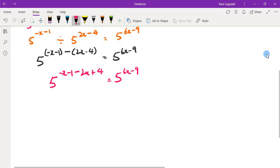Then here I can simplify it a bit. I can say 5, so minus x and minus 2x is minus 3x, 4 minus 1 is plus 3, equals to 5 to the power of 6x minus 9.